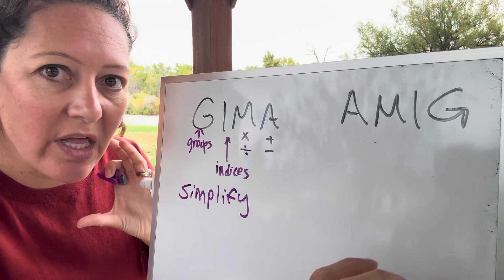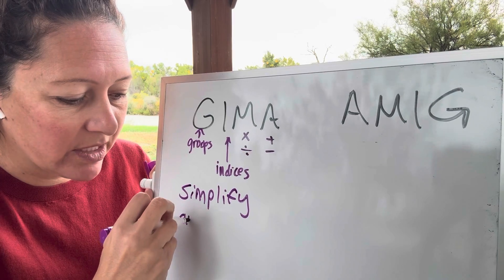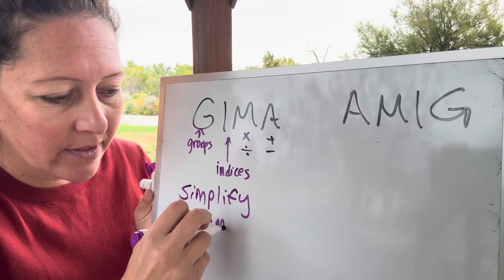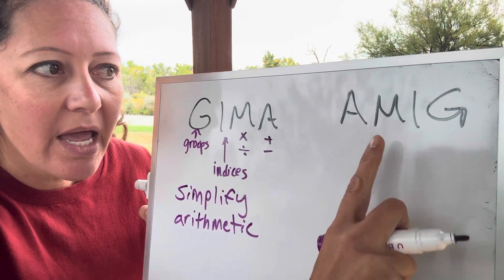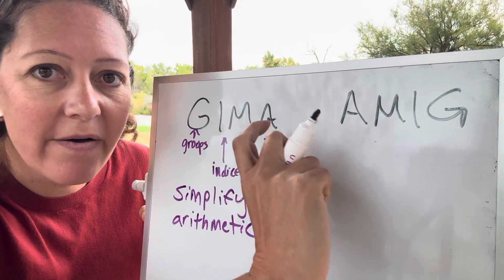So this is when you have a big, long expression. You're trying to simplify things together. That is arithmetic. AMIG is the opposite process. This is when we have a big, long equation.